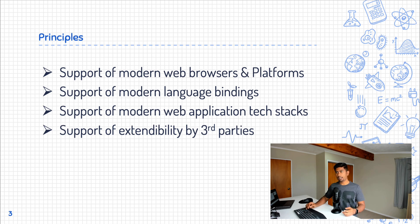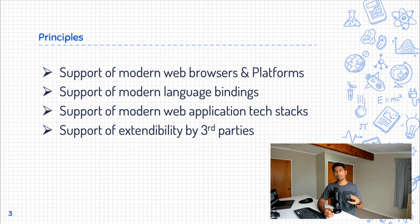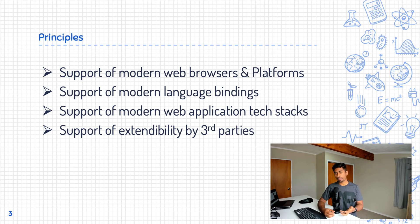Similarly, support of extendability by third parties: the tool we choose should be supported by third-party tools as an extensibility feature. For example, Selenium is a tool extended by many third-party testing tools like Test Project, Katalon Studio, and many other companies. These companies leverage the power of Selenium and build on top of it. So the testing tool we choose should support extensibility and enable other testing tools to run on top of it.